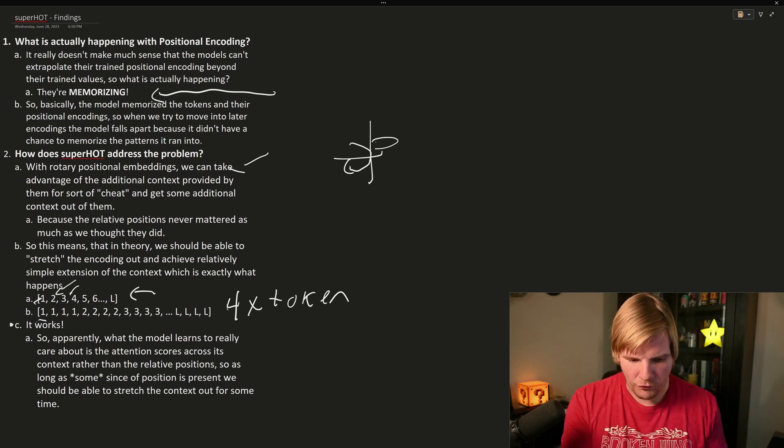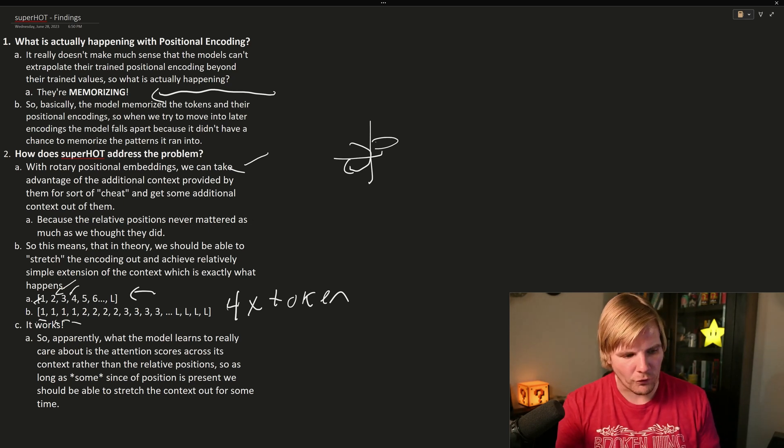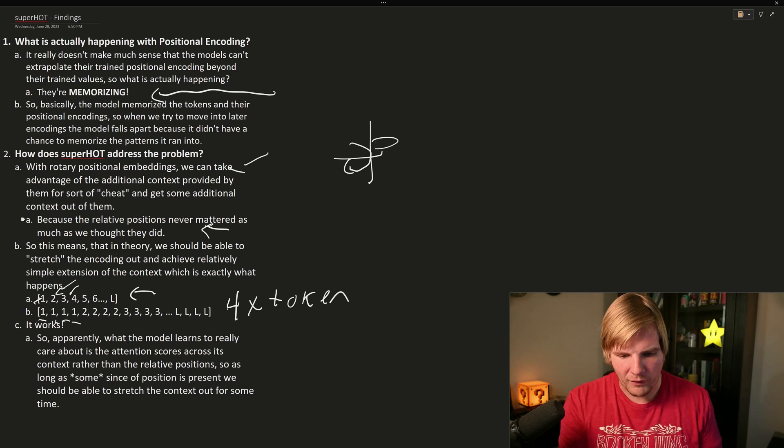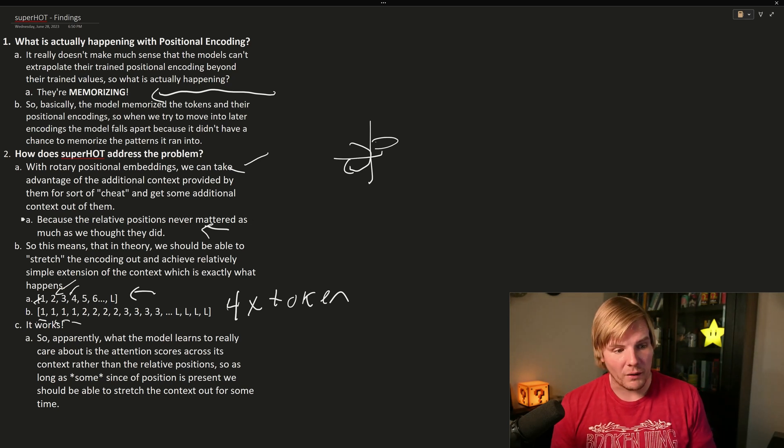So for the first token, it would get the first positional encoding and the same for the second token and the third token and the fourth token. But then the fifth token would get the second encoding and so forth. And this just works. It does. Because as we've learned, this relative and absolute positioning never really mattered.